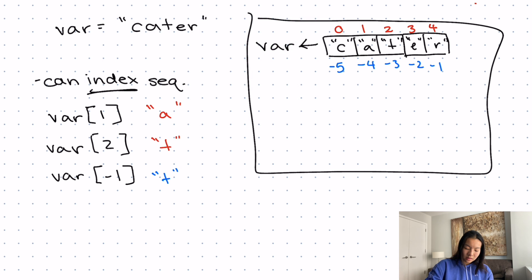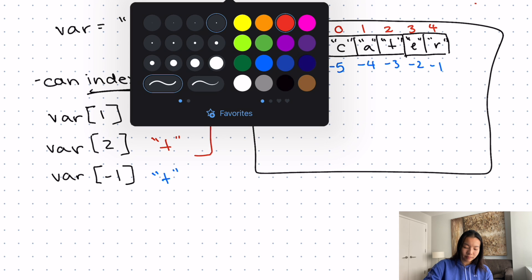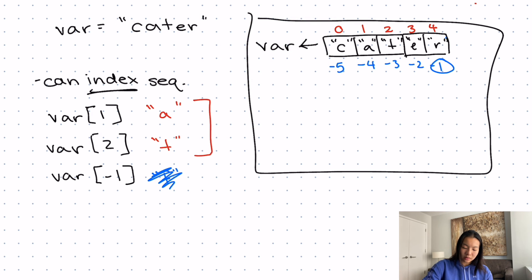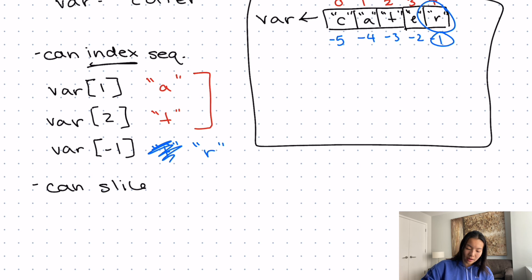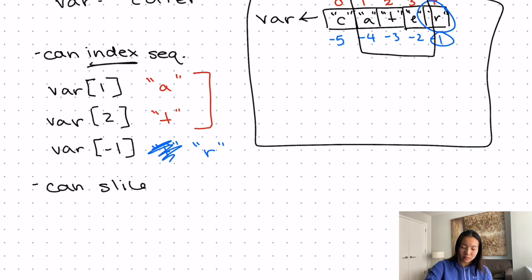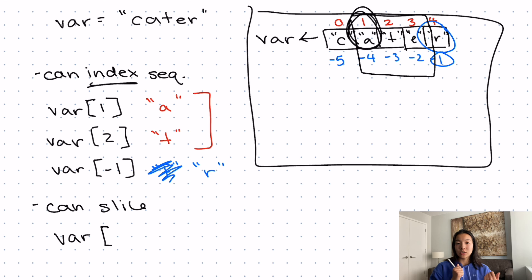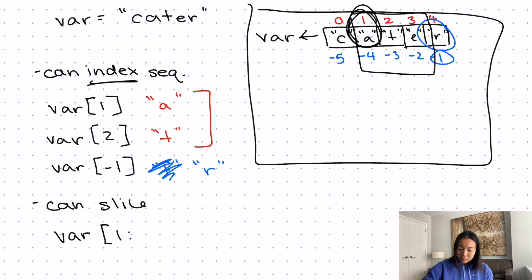These two here stay the same, but this one down here, instead of t, we go to negative one, and that's now R. So then we can also slice. If I wanted to only get the middle three, then what I could do is say var from the first thing that we want. So the first character is this A at position one. I'm going to go from position one, and then this colon denotes until. And actually we go until the thing that we don't want. So here, we go until four. And now this will give us ate as a string.